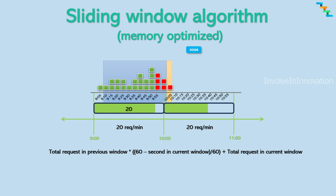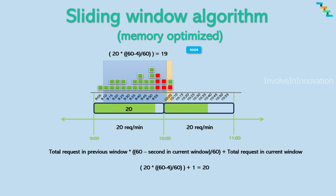We need to find the approximate request count for the last 56 seconds in the last fixed window. Here it is 19, plus the current window request count of 1, which equals 20. So this request is processed.